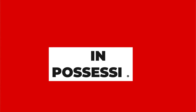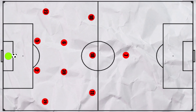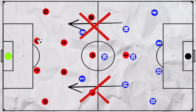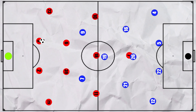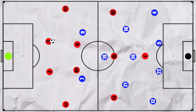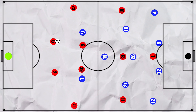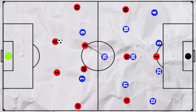United were the more dominant side with 62% possession, so what did they look to do? When United had the ball, Everton had no interest in pressing, ending with a passes per defensive action of over 35. They usually sat in a deep to mid block 4-4-2 diamond, with James sitting deeper on Pogba or Fred.